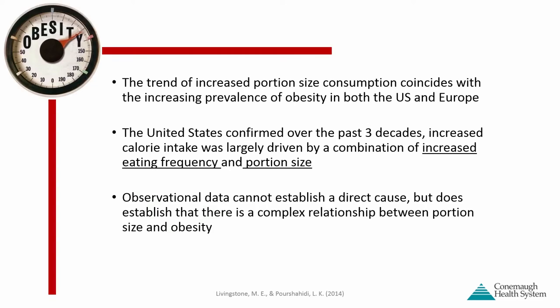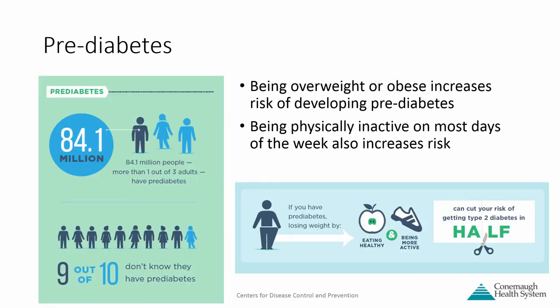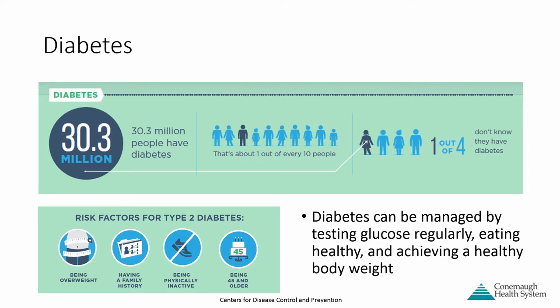What's leading to all this extra weight gain? It really has to do with the food we're eating and our physical activity level. Portion size definitely coincides with the increasing prevalence of obesity. Over the past three decades in the United States, increased calorie intake was largely driven by a combination of portion size and increased eating frequency. Being overweight or obese increases the risk of developing pre-diabetes greatly, as does being physically inactive. Some risk factors like being overweight or physically inactive are modifiable — those are the things we want to take control of. Currently, 30 million Americans have diabetes.